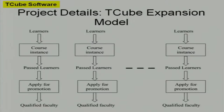This is the T-Cube expansion model. When a course instance is run, learners do the courses, they pass the course and then apply for assistant teacher position. When they qualify for the next instance, they may take that course and new learners will be coming. Those new learners will then pass, apply for the teaching assistant position, qualify, and continue to the next instance of that course as a teacher. This is how it will evolve.